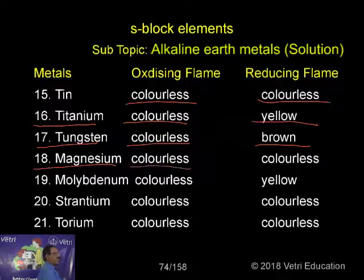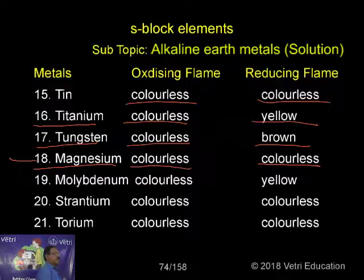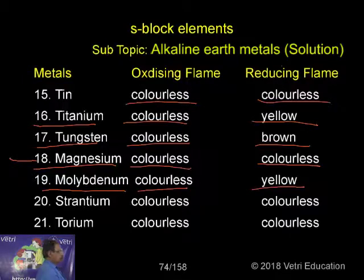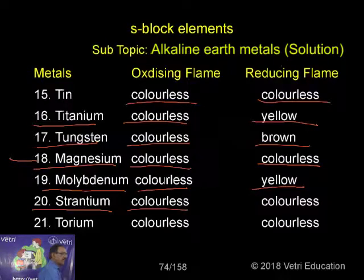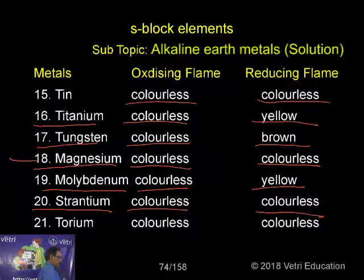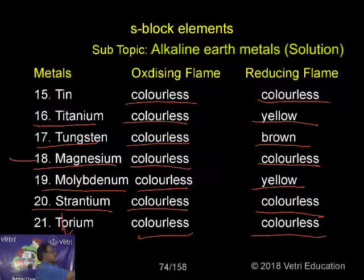Magnesium is colorless in oxidizing flame and colorless in reducing flame — magnesium comes in the second group. Molybdenum is colorless in oxidizing flame and yellow in reducing flame. Strontium, also a second group metal, is colorless in both oxidizing and reducing flame. Lastly, thorium is colorless in both oxidizing and reducing flame.